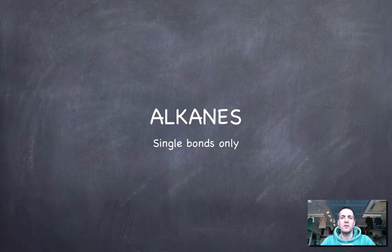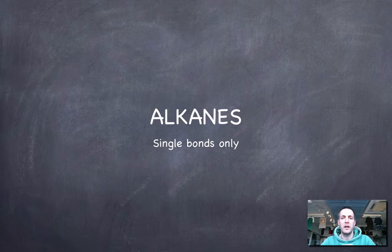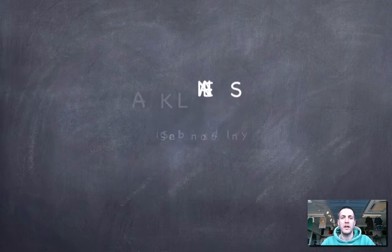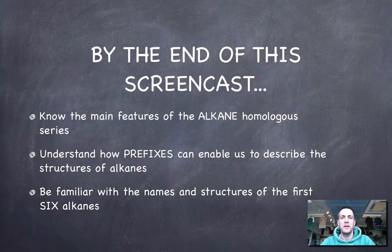Hello, and welcome to the third in a series of films about the standard-level organic topic. Here we're going to be looking at a particular type of homologous series called the alkanes, and hopefully by the end of this film you'll know what features all alkanes possess, how we can use a system of prefixes to identify how many carbons there are in a carbon chain, in particular with the alkanes, and also you'll be able to name the first six alkanes, so that is alkanes with up to six carbon atoms, and be able to draw their structures.